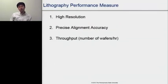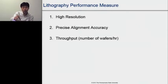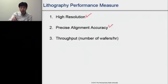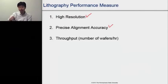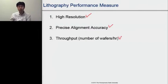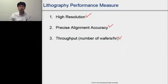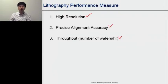So what's the measure of good lithography? Good lithography should provide high resolution, precise alignment accuracy, and very high throughput. For high resolution, based on current technology in the microelectronics industry, we are in the range of smaller than 20 nanometers, and they keep following Moore's law, pushing to achieve much smaller feature sizes.